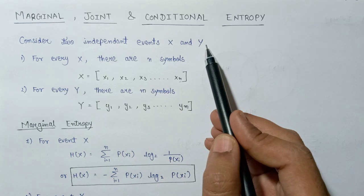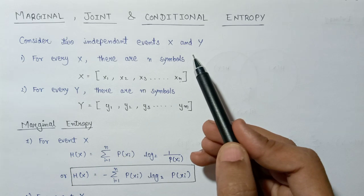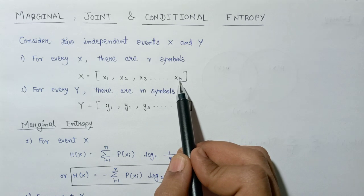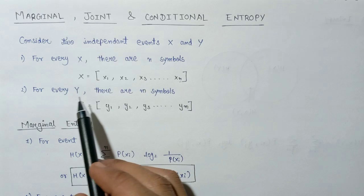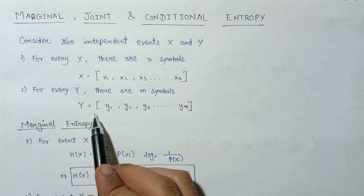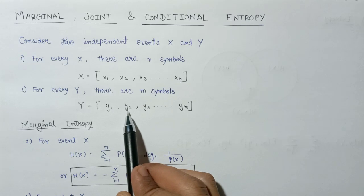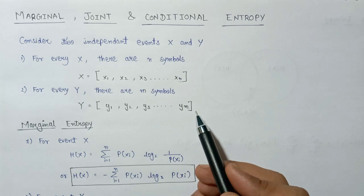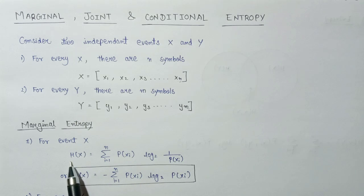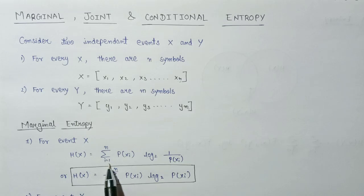Now let us have a look at marginal, joint, and conditional entropy. Consider two independent events X and Y. For event X, there are n symbols: X1, X2, X3, up to Xn. For event Y, there are M symbols: Y1, Y2, Y3, up to YM. The marginal entropy for event X is denoted by H(X), with the formula: summation i from 1 to N of P(Xi) × log base 2 of 1 over P(Xi).